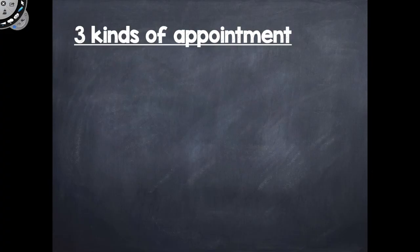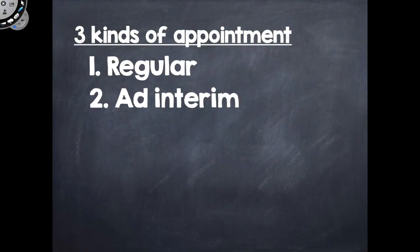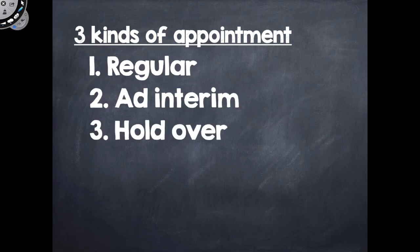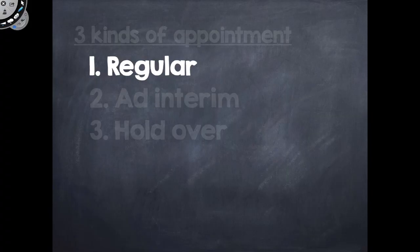Now, there are three kinds of appointments. The first one is called a regular appointment. Number two is called ad interim appointment. And the third one is a holdover appointment. First, regular appointment. This happens when a person is appointed to serve as a BON for three years. So if a person is appointed for a period of three years, then obviously that is a regular appointment.